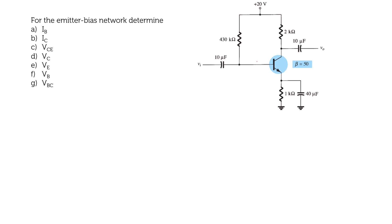Before going on to the problem, let me give an introduction about DC analysis — specifically the DC analysis of the emitter bias circuit. For the DC analysis, you open-circuit the capacitors and just redraw the circuit.